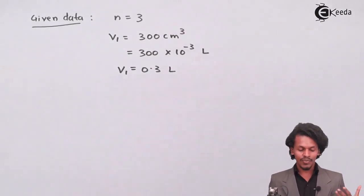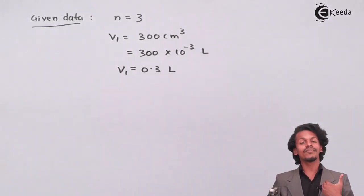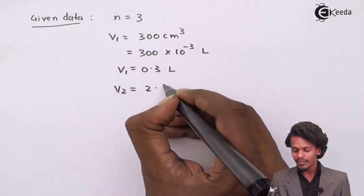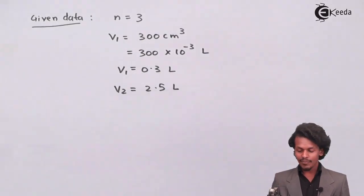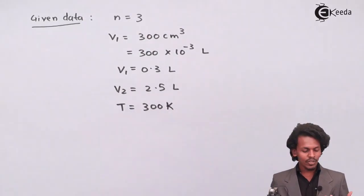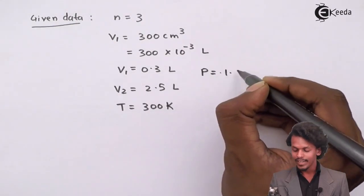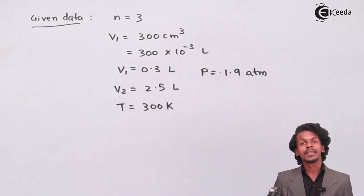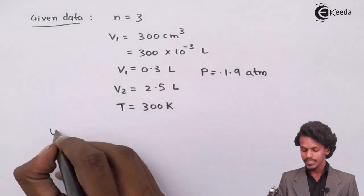V2 = 2.5 liters. The temperature given is T = 300 Kelvin, and the pressure given is P = 1.9 atmosphere. Based on this data we have to calculate the work done.